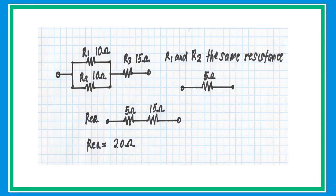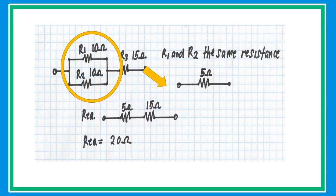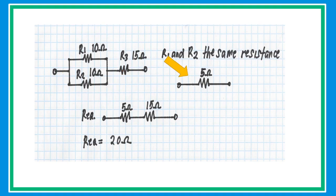Here we have another example. Let's calculate the resistance: R1 is 10 ohms, R2 is 10 ohms, and R3 is 15 ohms. Notice that R1 and R2 are connected in parallel with the same value, so just get half of it to get a 5 ohm equivalent resistance. Then redraw the circuit and add R3 (15 ohms) in series to get a total equivalent resistance of 20 ohms.